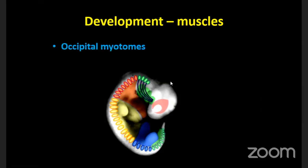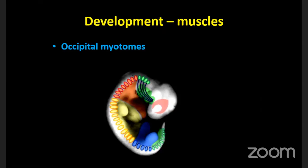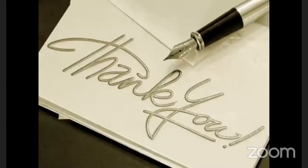Regarding the muscles of the tongue - they have a different origin. They arise from the occipital myotomes. Myotomes are the part of somites (somites are divided into myotome, dermatome, and sclerotome). These occipital myotomes give rise to the muscles of the tongue. The nerve of the occipital myotome is the hypoglossal nerve, which is why all muscles of the tongue are supplied by the hypoglossal nerve.